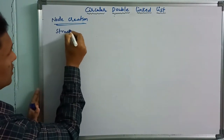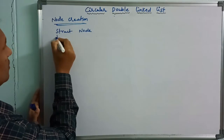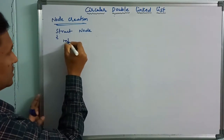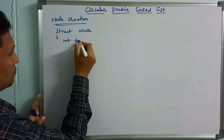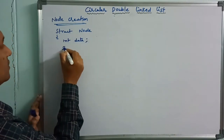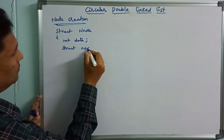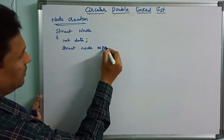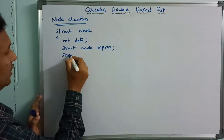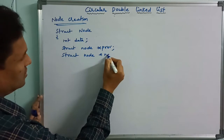So, struct node — we have three parts only. The first one is the data part. For example, we have created an integer type of data. We have the previous link: struct node star previous.